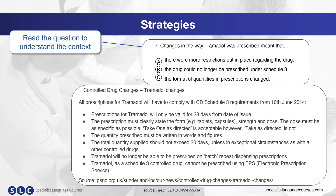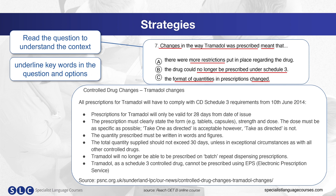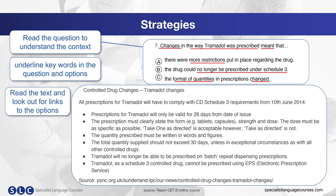First, read the question to understand the context. Think about underlining the key words. Then read the three options and notice the differences between them. Then read the text and look out for links to the options. When you decide why one option is correct, you can confirm this by noticing why the other options are incorrect. Be careful because there may be distractors where all three options are mentioned in the text, but only one will fully answer the question.